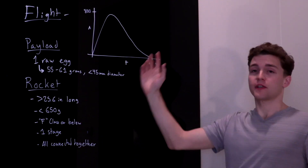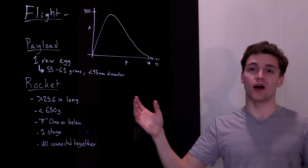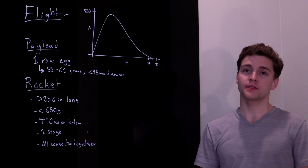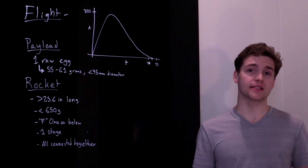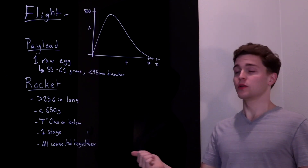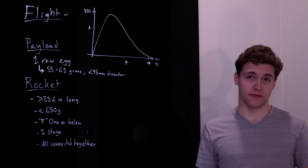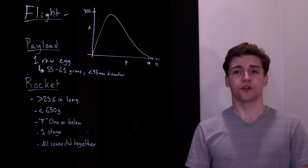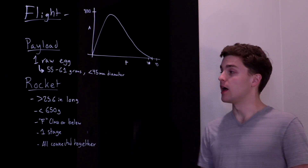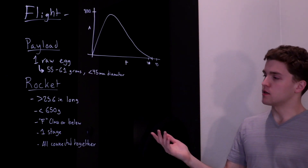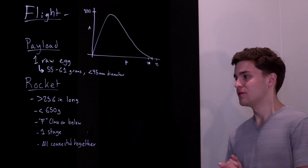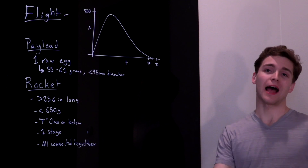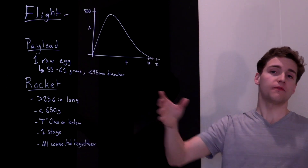While we're doing this, we also have to carry a payload. This year's payload is one raw egg — it has to weigh between 55 and 61 grams, and it needs to have a diameter of less than 45 millimeters. This year we're lucky that it's only one egg; last year it was three. There are also requirements for the rocket's airframe: it has to weigh under 650 grams, it can only have one stage, and the entire vehicle has to stay together from liftoff until it lands.